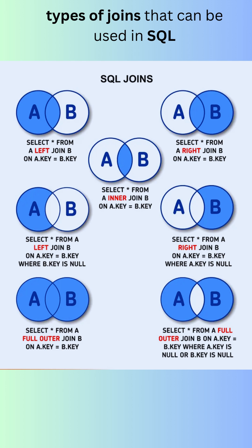The third example shows a full outer join. Again, the left table is called A and the right table is called B. The join condition is the same. The result of the join is that all rows from both tables are returned, whether or not there are matching rows in the other table.